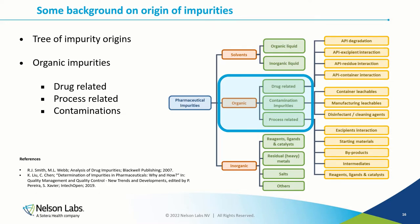Before going deeper into the identification part, I want to show some background related to the possible origin of impurities. What we see here is a classification of different pharmaceutical impurities. The first classification is based on the chemical nature: impurities can be solvents, organic, or inorganic. In this presentation, we will mainly focus on organic impurities, which can be either drug-related, appearing mostly in drug products, process-related, appearing mostly in drug substances, or they can be contaminations.